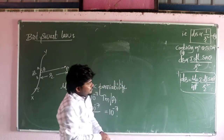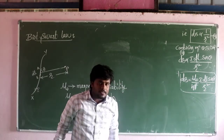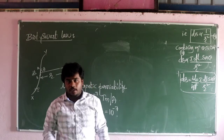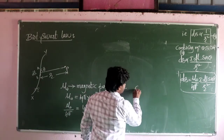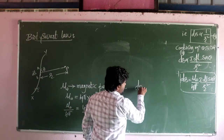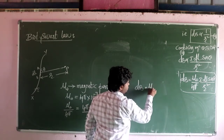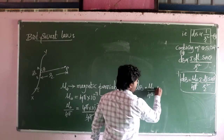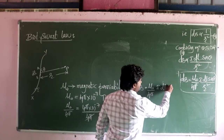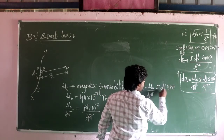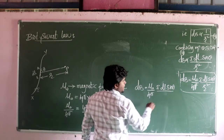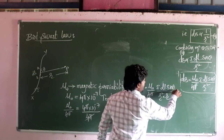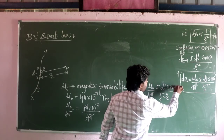Next concept: how to write the Biot-Savart law in vector form. The vector form is: dB is equal to mu0 divided by 4pi, then i dl sin theta divided by r square, into r, into vector r.